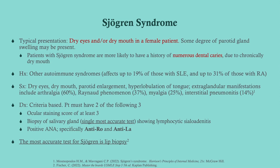In the history, look for other autoimmune syndromes. About one in five people with lupus will have Sjögren's syndrome, and about one in three people with RA will have Sjögren's syndrome. So while the overall prevalence is one to two percent, a large proportion of those patients have RA or lupus — look for that in the history.